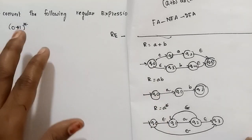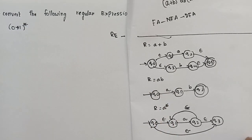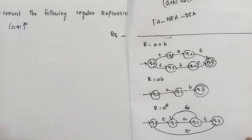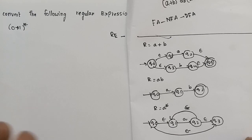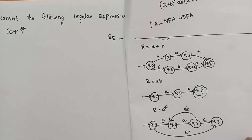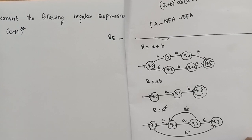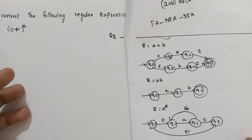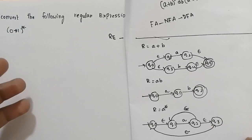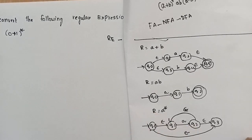If you have a notation, we will simplify this notation. We have a regular expression, and a finite automata accepts a language. We have a regular expression, and now we can convert it to a non-deterministic finite automata with epsilon moves.